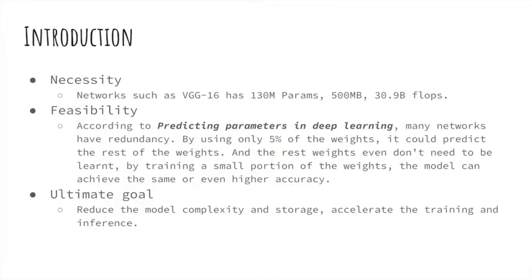There are three aspects to think about network compression and acceleration. First of all, it's necessary to do compression and acceleration. For example, a VGG16 network has 130 million parameters, and each occupies 4 bytes, then it's around 500 megabytes, and it needs 30.9 billion FLOPs per recognition task on one single image. And in the paper 'Predicting Parameters in Deep Learning', it mentions that even though the network is large, only 5% of the weights could predict the rest of the weights, and the rest don't even need to be learned. The network could achieve the same accuracy, so there is big redundancy in the network and we need to get rid of that information redundancy.